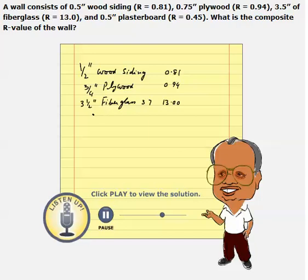And the last layer would be 1/2-inch plasterboard, which is also drywall, and its R value is given as 0.45.